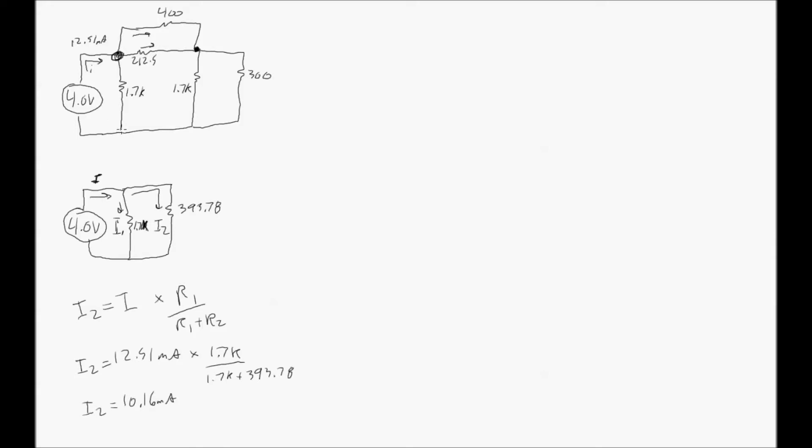And here is the second branch through the 1.7K resistor. So we need to simplify the circuit into equivalent resistances so that there is only two resistors that the current branches through.